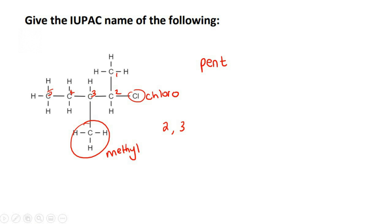Now, you have to go alphabetically. C is before M. So on carbon number two, there is a chloro. And on carbon number three, there is a methyl. And how many carbons did we say? Five. So that's pent.